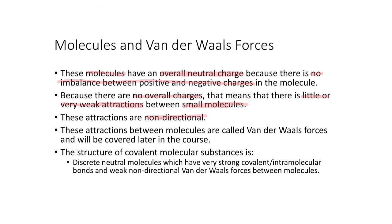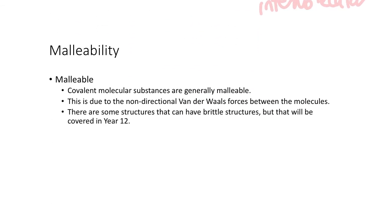These attractions between molecules, not within the molecule, but between them, are called van der Waals forces, and we'll be dealing with those later in the course. Therefore you would describe the structure of covalent molecular substances as discrete, which means individual molecules, which have very strong covalent or intramolecular bonds, but weak non-directional van der Waals forces between molecules or intermolecular bonds. That's the description for covalent molecular substances. So how does that affect their properties?